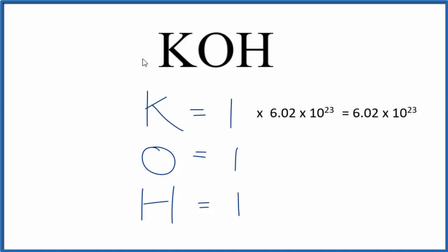So in one mole of KOH, we have one mole of potassium atoms, Avogadro's number, and we could do the same thing here for oxygen and hydrogen. So that's how you find the number of atoms in KOH, potassium hydroxide.